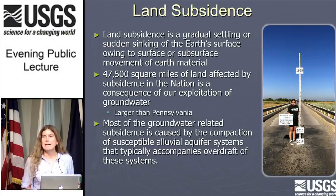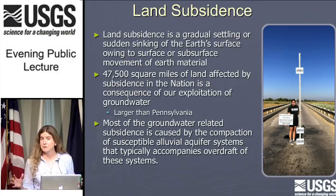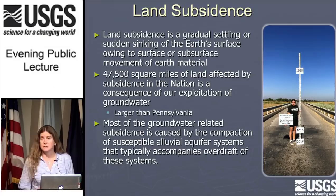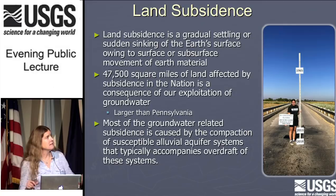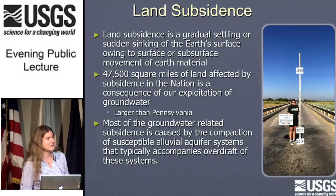To get us on the same page: in the broadest sense, land subsidence is a gradual or sudden sinking of the Earth's surface, owing to processes happening either on the surface or below the surface. Almost all of the land subsidence in our nation — more than 47,000 square miles, which is about the size of Pennsylvania — is a result of our exploitation of groundwater. Almost all of that subsidence is caused by the compaction of susceptible alluvial aquifer systems that accompanies overdraft. Overdraft means we're pumping more out than is replenished — year to year. Kind of like a bank account.